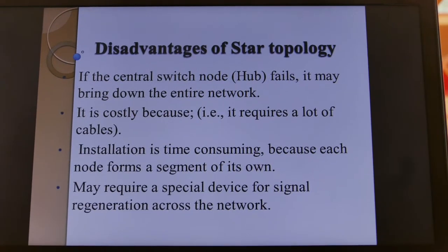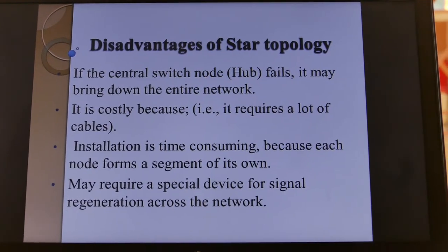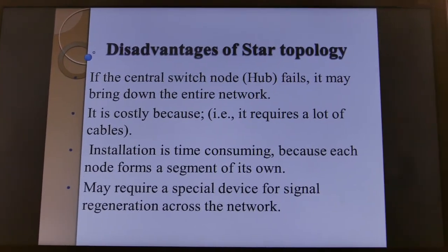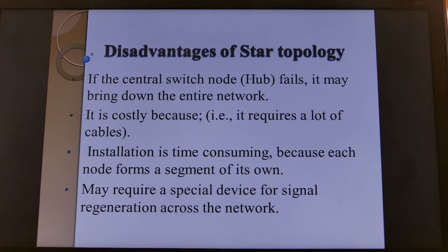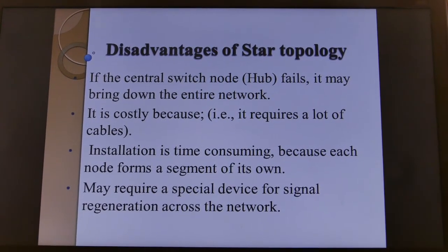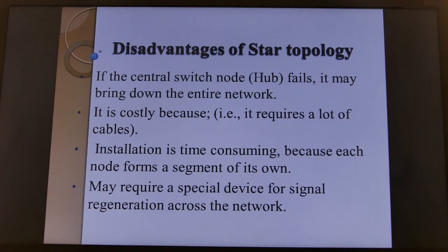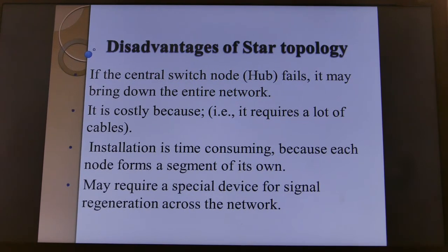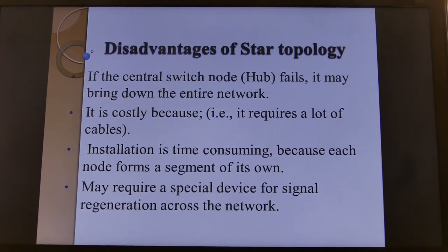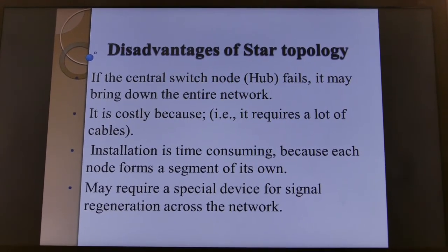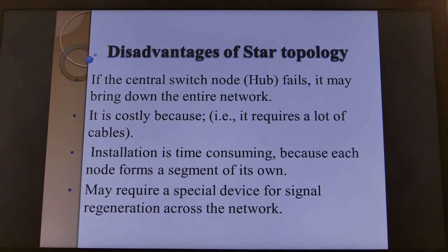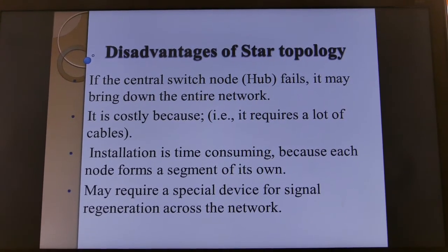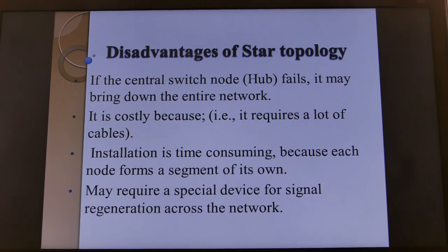Disadvantages of star topology: if the central hub fails, it brings down the whole network, meaning every computer will stop working. It is costly because it requires a lot of cables to connect the workstations. Installation is time consuming, and lastly it requires special devices for signal regeneration across the network, which is also expensive.